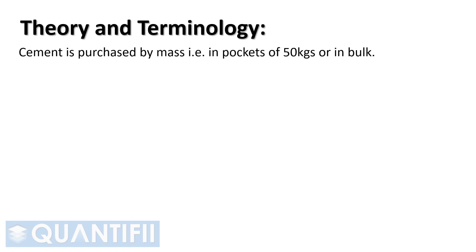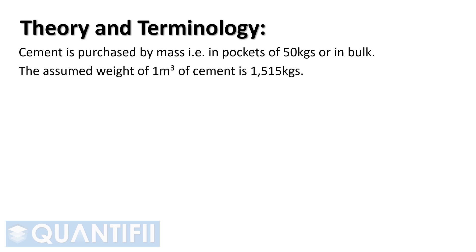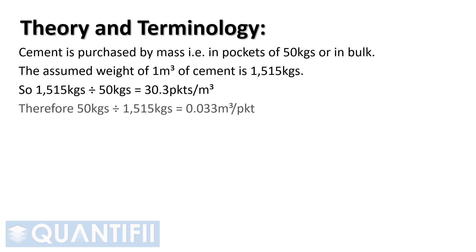Cement is purchased by mass, that is, in pockets of 50 kg, or in bulk. The assumed weight of 1 cubic meter of cement is 1,515 kg. So, 1,515 kg divided by 50 kg pockets equals 30.3 pockets per cubic meter. Therefore, 50 kg divided by 1,515 kg equals 0.033 cubic meters per pocket.